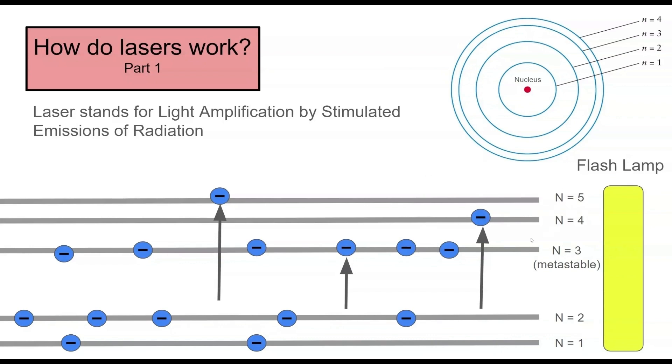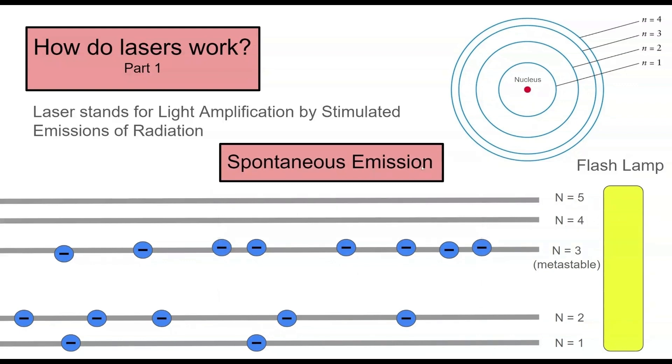But most importantly, higher levels. And eventually, through spontaneous emission, these electrons will fall to this metastable level right here, and it will fall there because this metastable level has a higher lifespan.